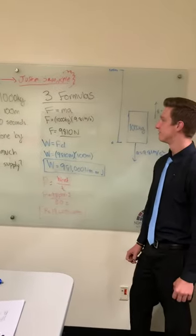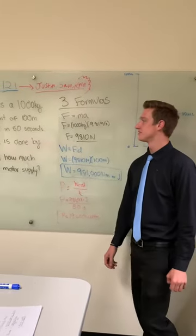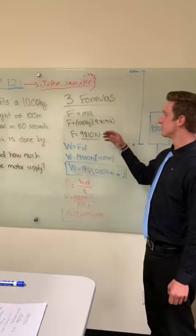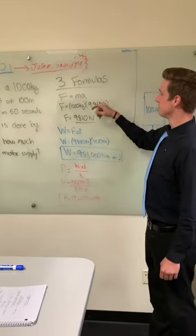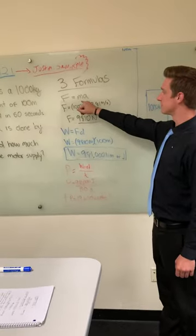Sam's going to go through the formulas here. To start the problem off, we need to find how much work. To find the work, we need to find the force that was exerted on the elevator. We have force equals MA.